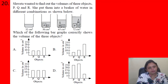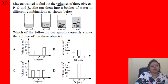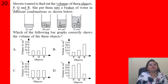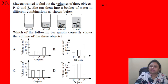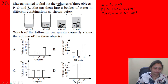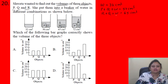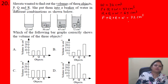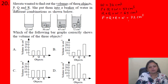Next question: Sweta found the volume of three objects P, Q, and R by placing them in a beaker of water in different combinations. Water only = 32 cm³; P + Q + water = 50 cm³; R + Q + water = 65 cm³; P + Q + R + water = 72 cm³. We need to find the individual volumes of P, Q, and R to match the correct graph.